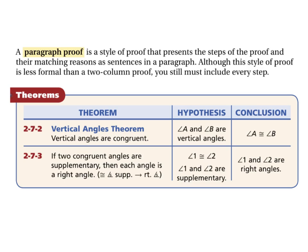We have two more theorems to learn: 2-7-2 and 2-7-3. The vertical angles theorem says if two angles are vertical, then they are congruent. The next theorem says if two congruent angles are supplementary, then each angle is a right angle — called the congruent supplementary angles theorem. The shortcut: congruent angles supplementary means right angles.